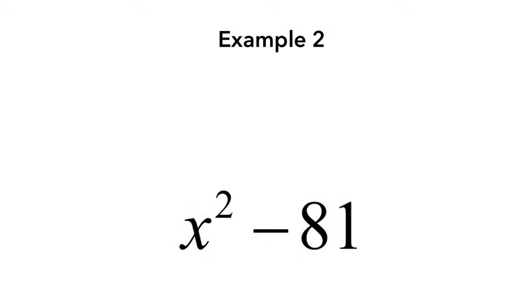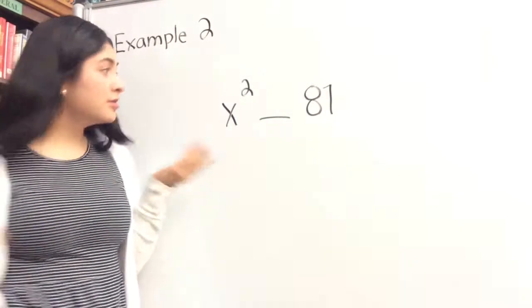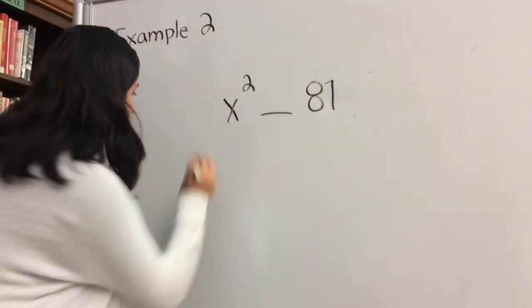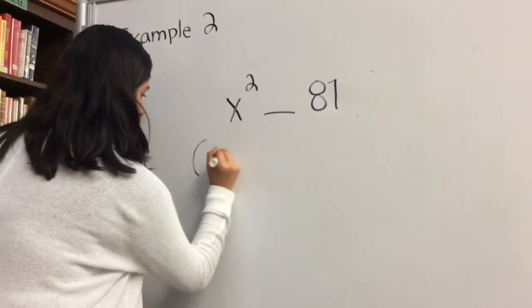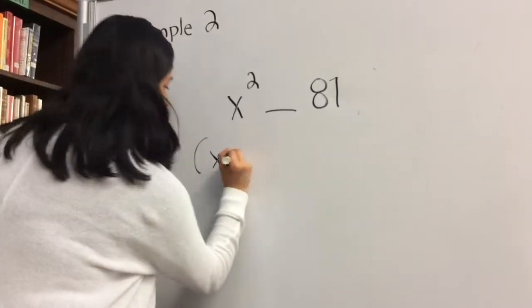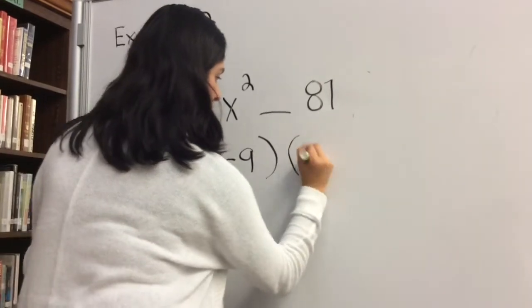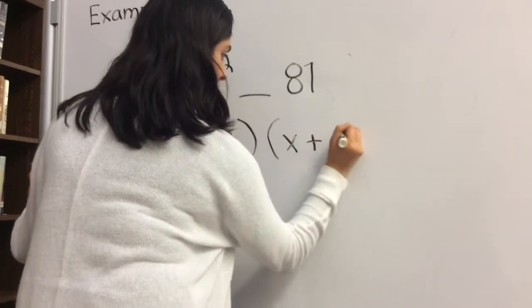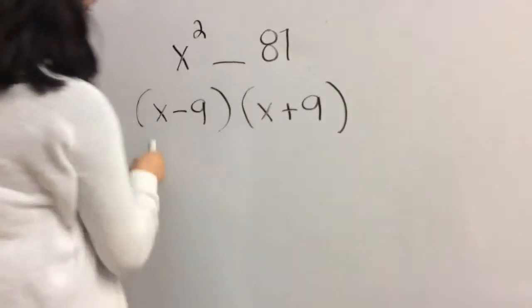Let's take a look at another example: x² - 81. This problem is quite simple. All we need to do is factor out an x from the x², and then factor out a 9 from the 81. Once you are finished, this should be your final answer.